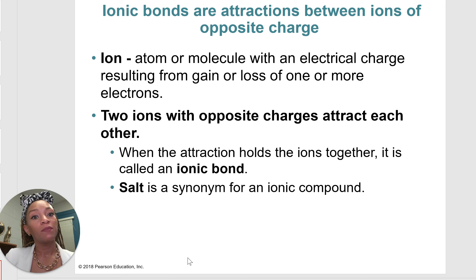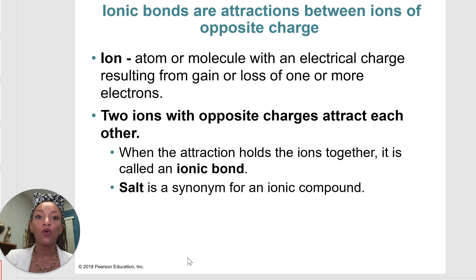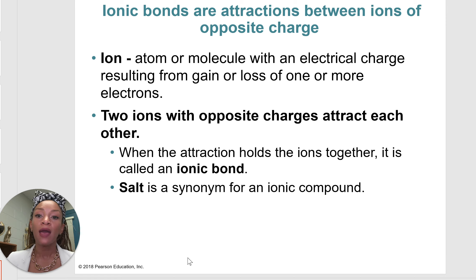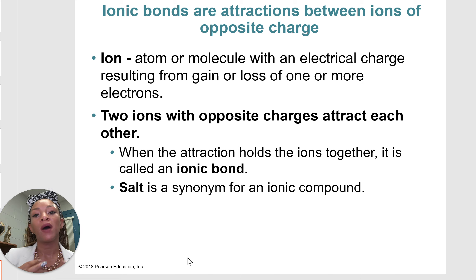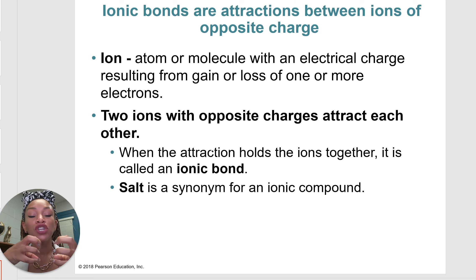Let's talk about ionic bonds. Ionic bonds are attractions between ions of opposite charges — opposites attract, and it is true in chemistry. An ion is an atom or molecule that has an electrical charge, either positive or negative, resulting from gaining or losing electrons. If an element gains an electron, it becomes negatively charged. If it loses an electron, it becomes more positive because some negativity has left. Two ions with opposite charges attract each other.